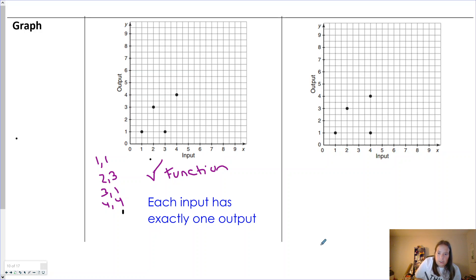But when we come over here, we see we have (1,1), (2,3), (4,1), and (4,4). 4 has 2 outputs.